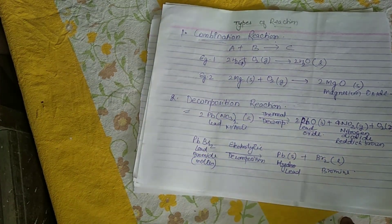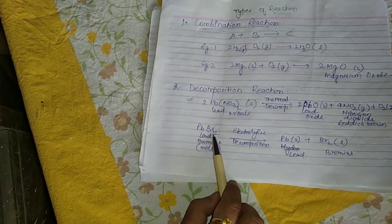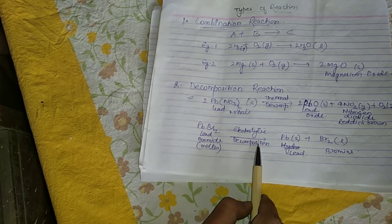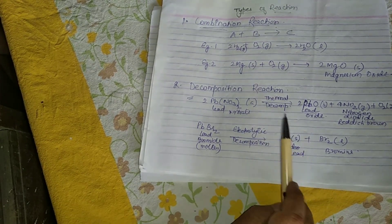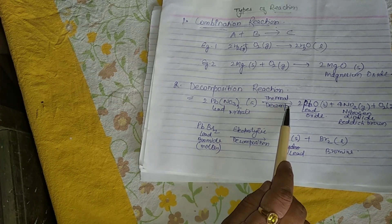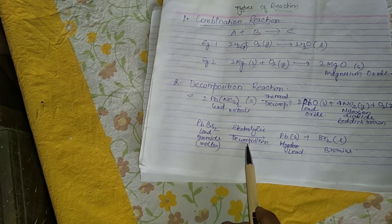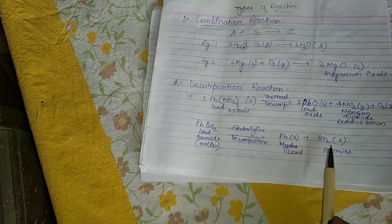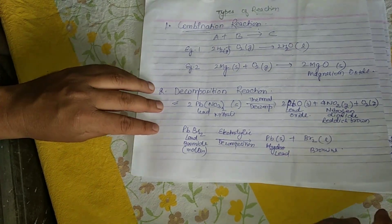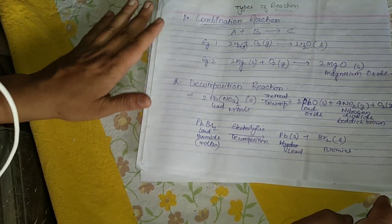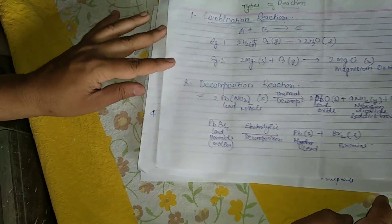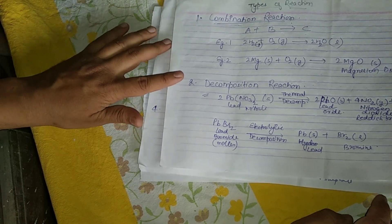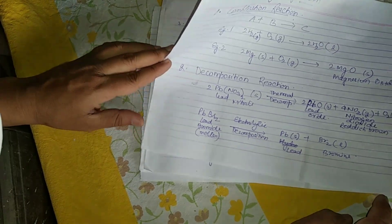Learn this reaction — it is very important and given in the NCERT as well. Another example is the electrolytic decomposition of lead bromide (PbBr2). There are many types of decomposition: thermal decomposition occurs in the presence of heat, while electrolytic decomposition occurs in the presence of electricity. PbBr2 decomposes into lead and bromine. Lead chloride (PbCl2) is also a very important reaction to know.